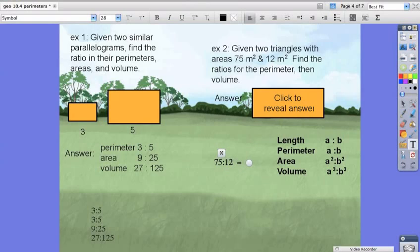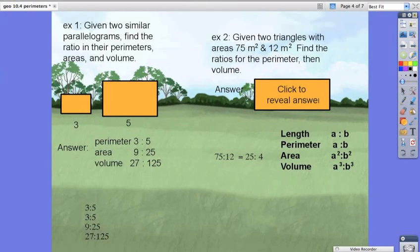which we can simplify to 25 to 4, because they both have a factor of 3.